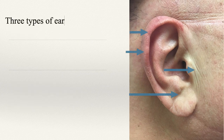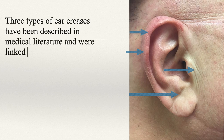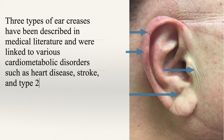Three types of ear creases have been described in medical literature, and were linked to various cardiometabolic disorders such as heart disease, stroke, and type 2 diabetes.